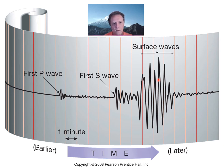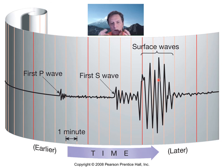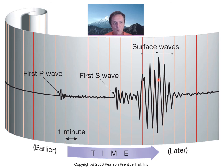The P wave hits you first, like a bang, and then you'll experience a delay. Then the S waves will come by and kind of roll the ground, and the surface waves will come by later, shaking the ground back and forth, up and down, all around. Every single earthquake — whether small or large — will generate each and every one of these waves: P waves, S waves, and surface waves.